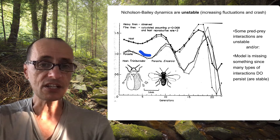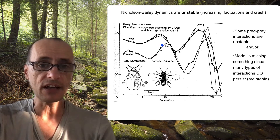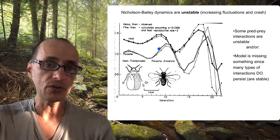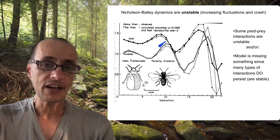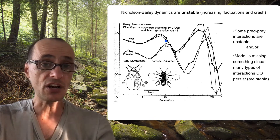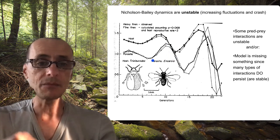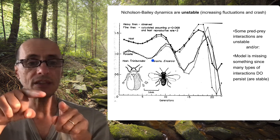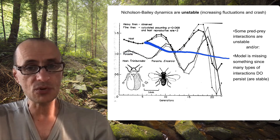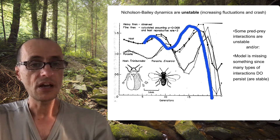The parasitoids decrease because they are in a one-generation lag. But then their numbers come back really strong. Look at how high this number is compared to before — they exploit a lot of hosts and start to attack them, causing those populations to decline. The next generation, even more parasitoids emerge because they show up a generation later. Now there's a ton of parasitoids around, forcing the host population to decline even more. What ends up happening is that the oscillations between parasite and host get bigger and bigger.